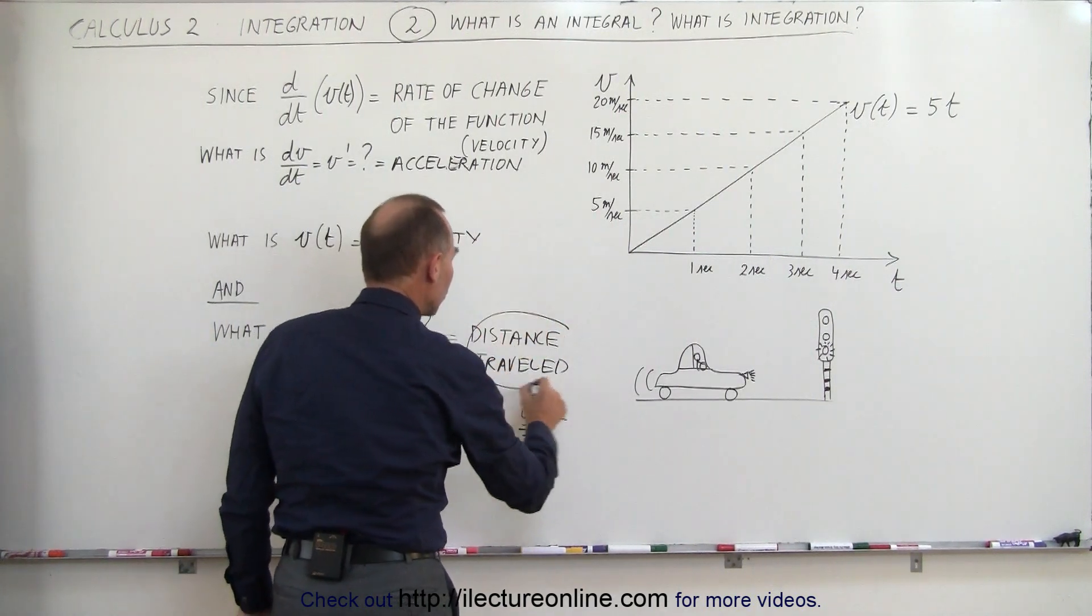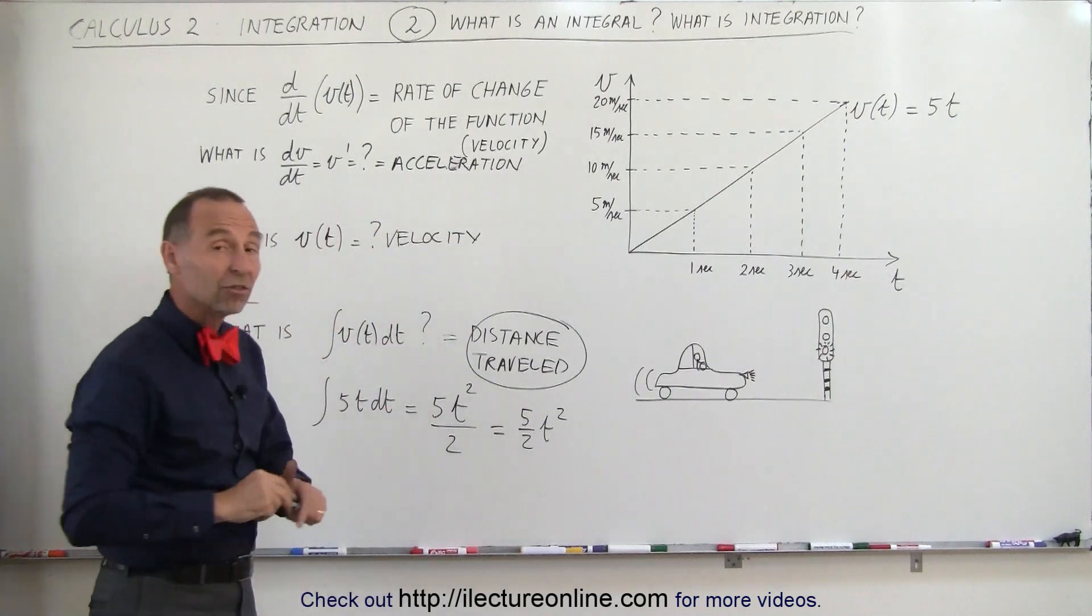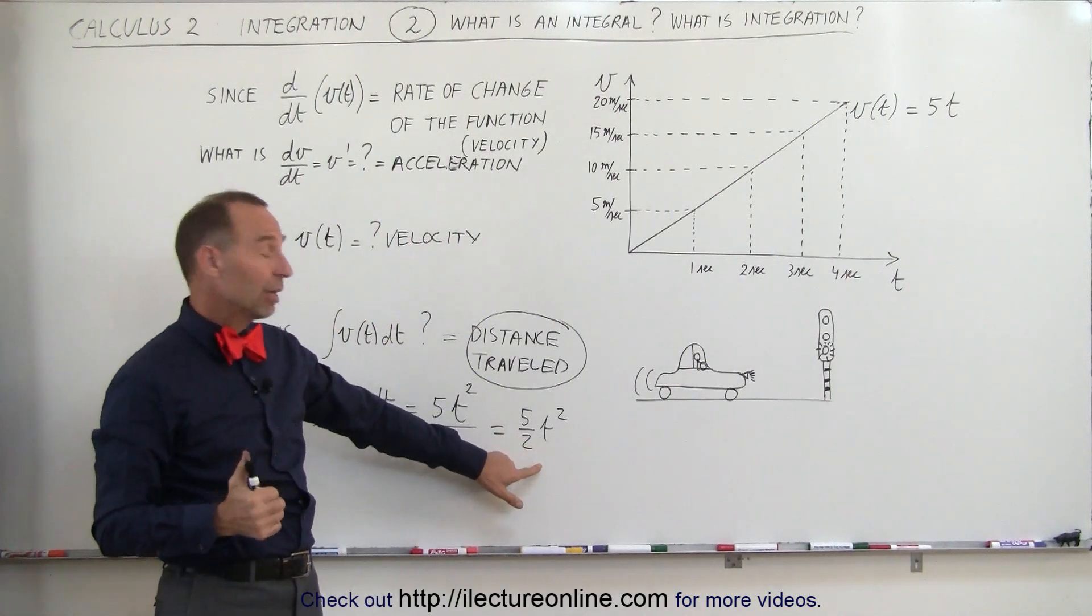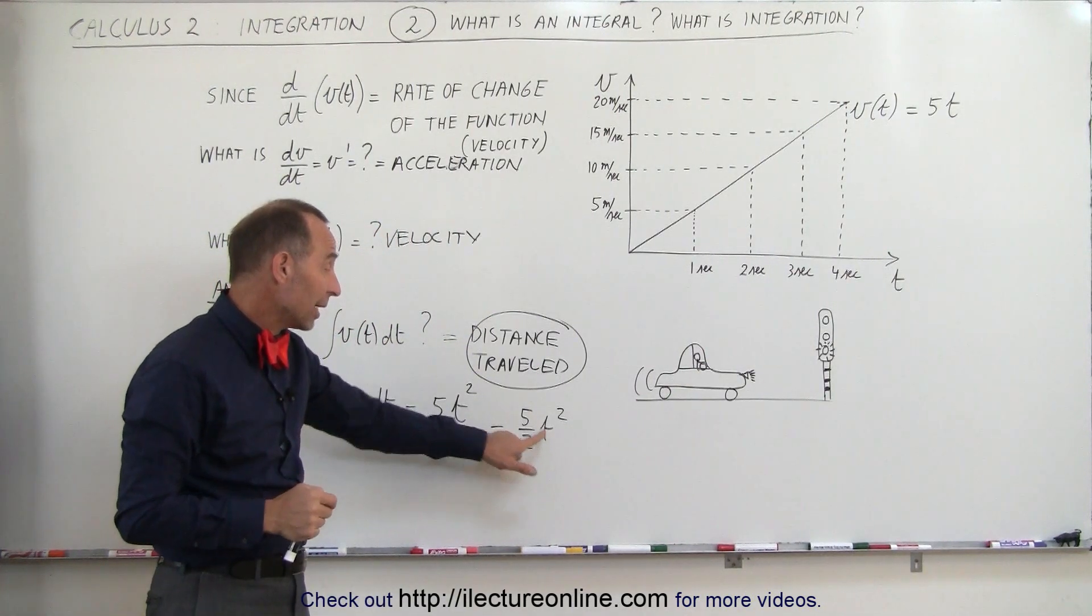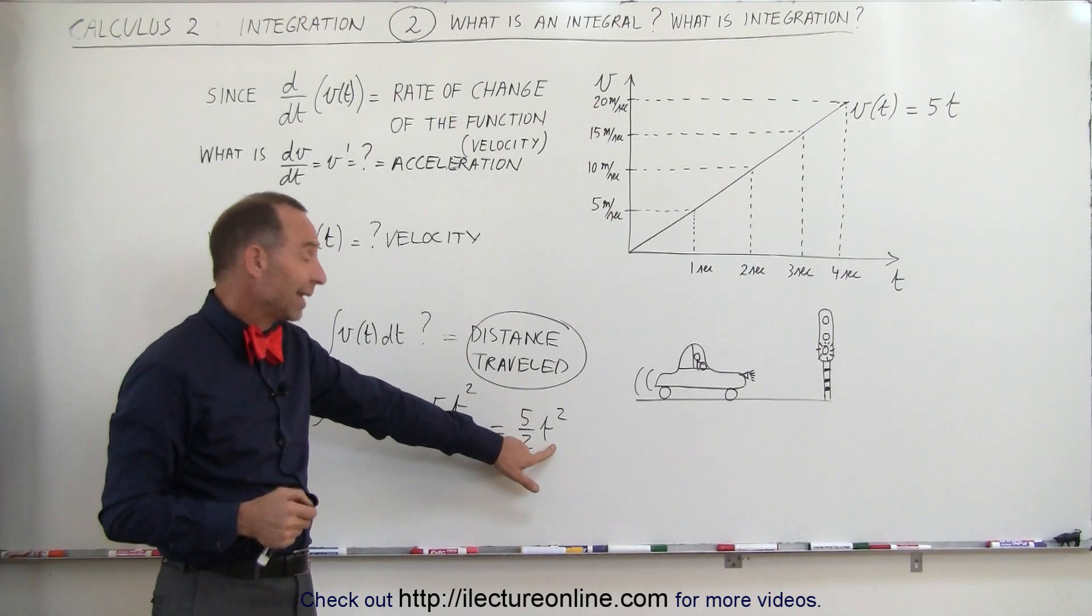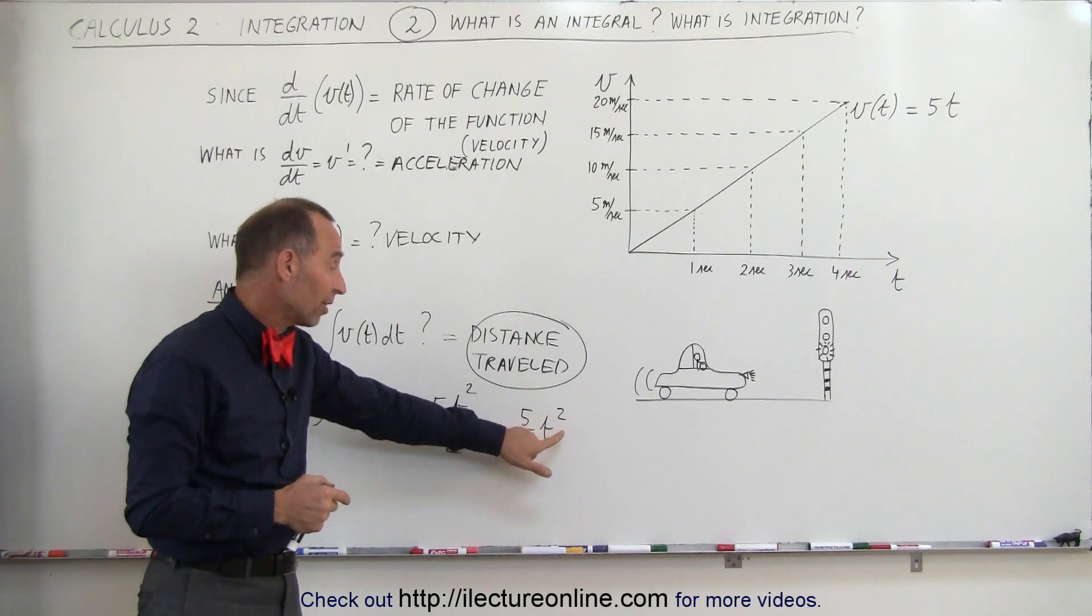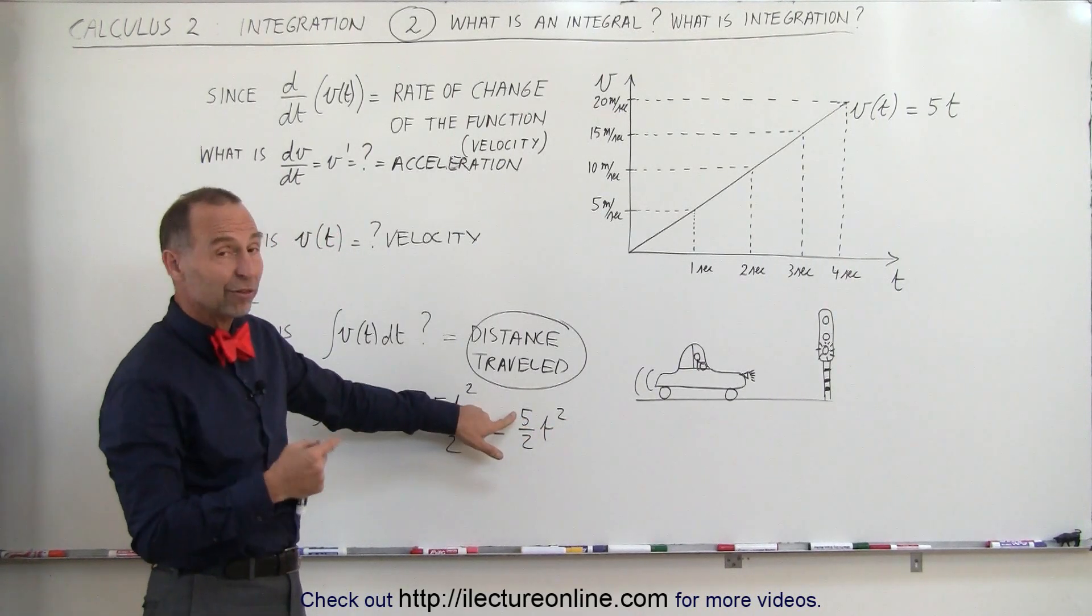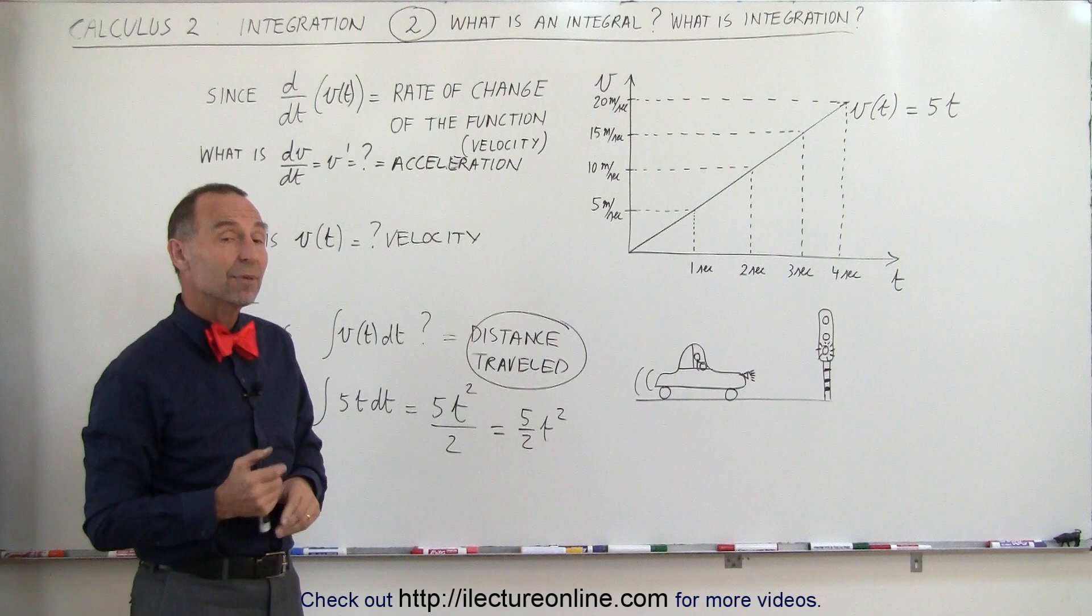And it represents the distance traveled. If we plug in 0 for t, we get 0. If we put in 1 for t, we get 2.5 meters. If we plug in 2 for t, we get 10 meters. If we plug in 3, 3 squared is 9 times 5 is 45 divided by 2, which is 22.5 meters.